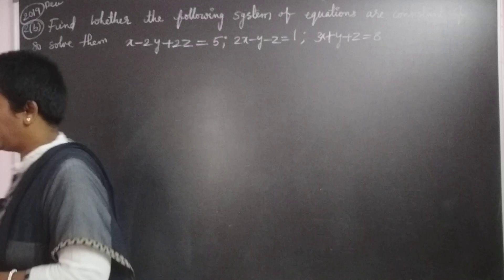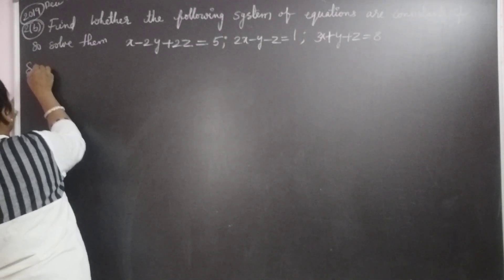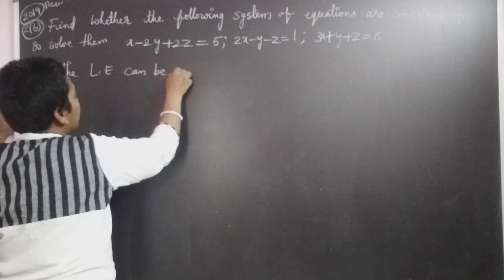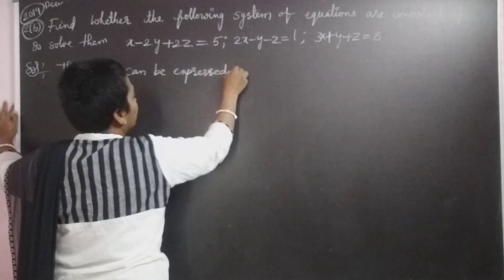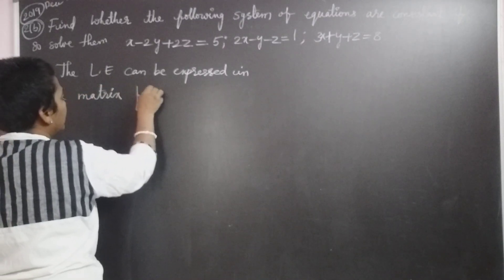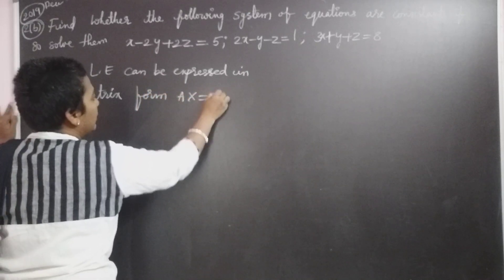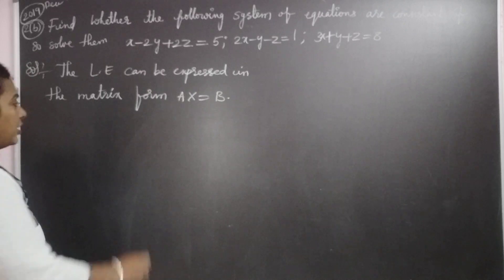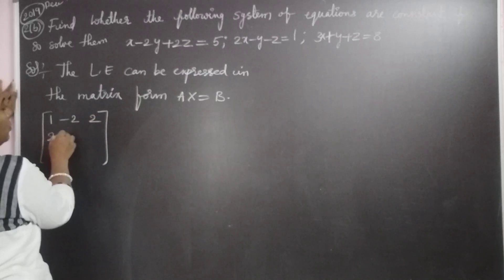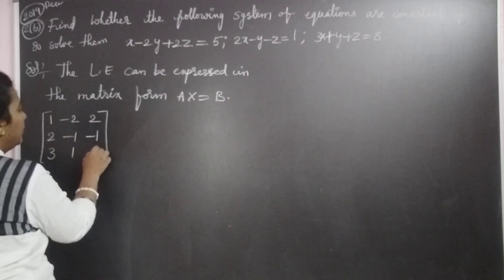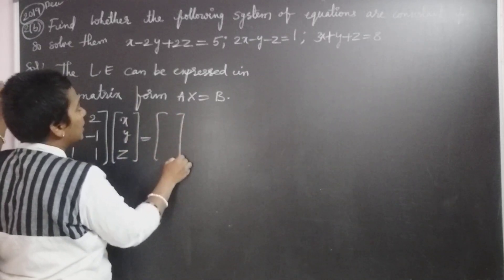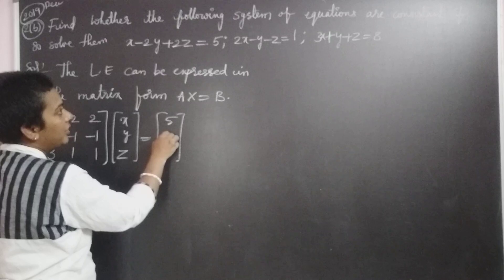Now I am taking the linear equations and expressing them in matrix form AX equal to B. Here, A is the coefficient matrix: 1, −2, 2; 2, 2, −1; −1, 3, 1. X is the variable matrix: X, Y, Z. And B is the column matrix of right-side elements: 5, 1, 8.